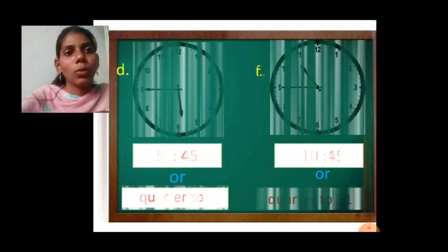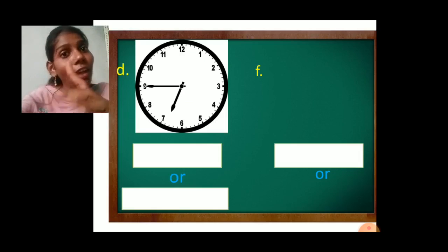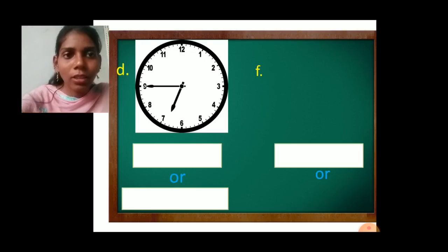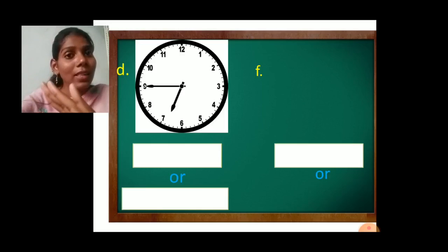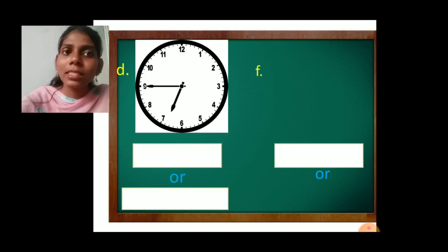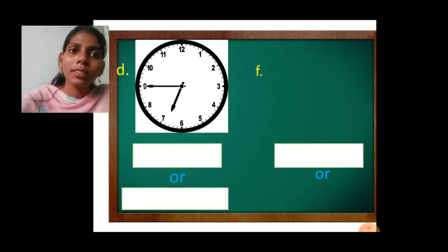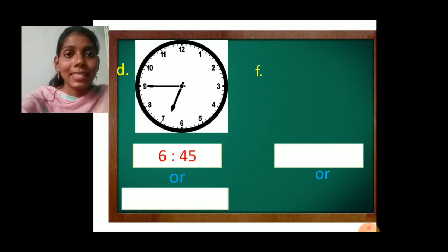Next is D. See this clock. The minute hand is at number 9 — it means 45 minutes, quarter to. The hour hand has crossed number 6, so it is 6 hours 45 minutes. And it is about to reach 7, so it is quarter to 7.